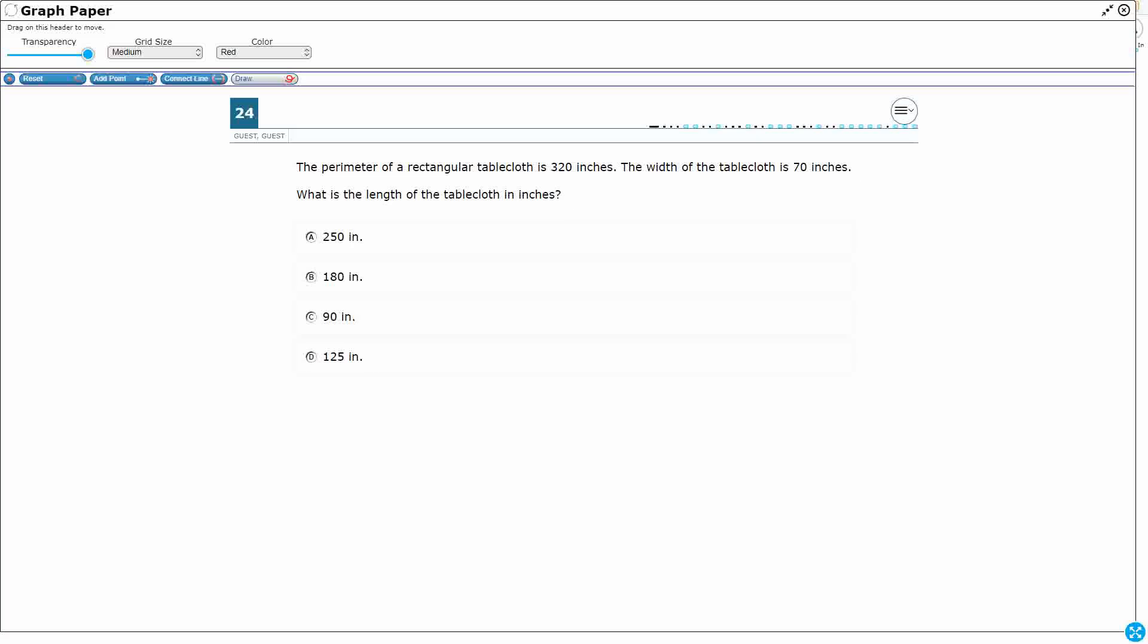So we have a perimeter of a rectangular tablecloth, so let me draw a rectangle down here. We need to remember the difference between perimeter and area. Perimeter's got that word rim in there, and if you think of a basketball rim, it's a metal circle that's empty on the inside and it's got the metal around the outside for the basketball to go through.